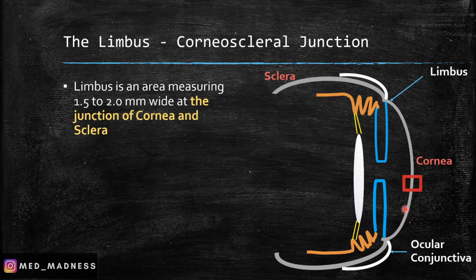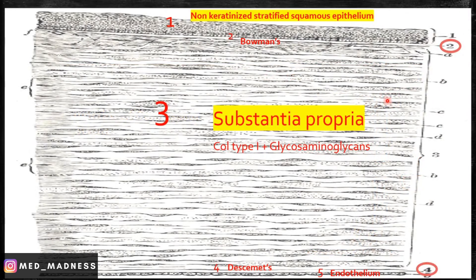Now, what I am going to do is take a section of the cornea and discuss about the five layers of the cornea, and then talk about the limbus and how these five layers undergo transformation there. The outermost layer is the non-keratinized stratified squamous epithelium. The major portion of the cornea is the substantia propria, or stroma, which is filled with collagen fibrils. This stroma is bounded anteriorly by Bowman's membrane, or the anterior limiting membrane, and posteriorly by Descemet's membrane, or the posterior limiting membrane. There is also a single layer of endothelial cells.